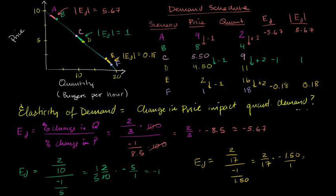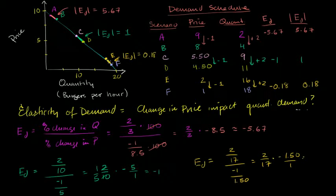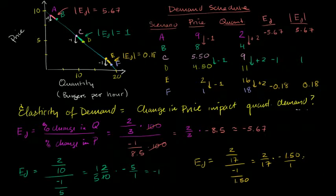What I want to do in this video is focus a bit more on the results of the last video and make sure that they make intuitive and mathematical sense to us, because something slightly strange happened. We had a linear demand curve, and for any given change in price — whether we went from A to B, C to D, or E to F — we had a $1 drop in price and every time a 2 unit increase in quantity demanded. This is a linear demand curve.